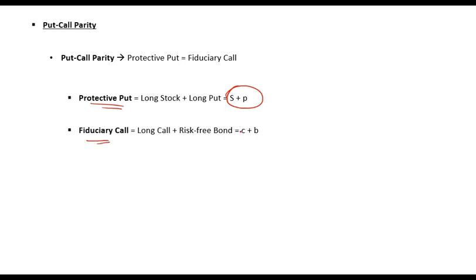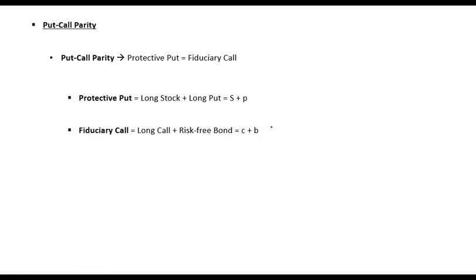Fiduciary call is buying a call option and buying a bond. So if you buy a bond and buy a call option, that is known as fiduciary call. Protective put is asset plus put option, and fiduciary call is call option plus bond. This bond should have a face value equal to the strike price on the options — so the strike price of the options should be the same as the face value of the bond.